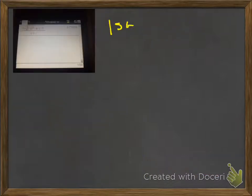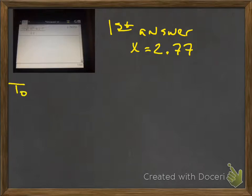You press enter, and you get that your X, your first answer, is going to be 2.76, whatever, whatever, whatever, and that would be 2.77, round it off.